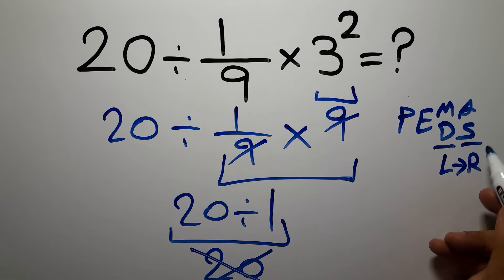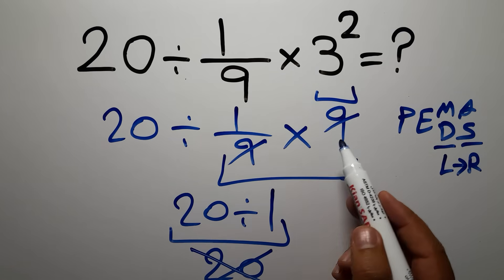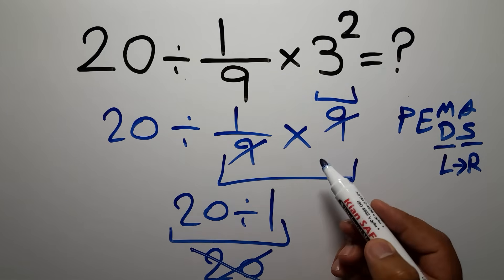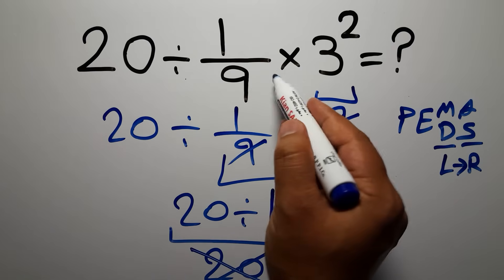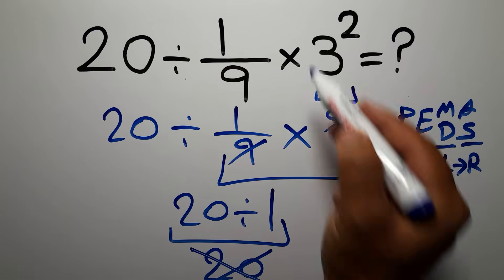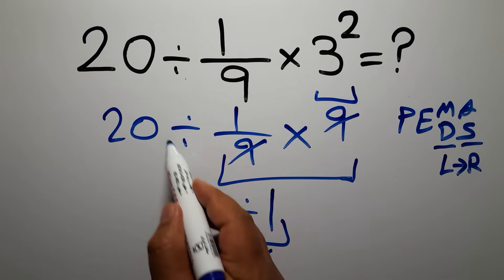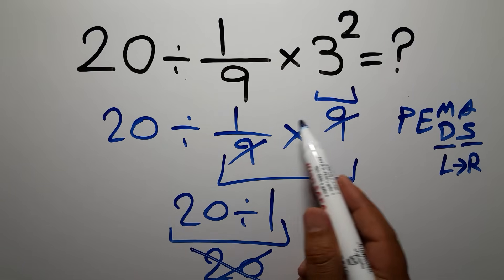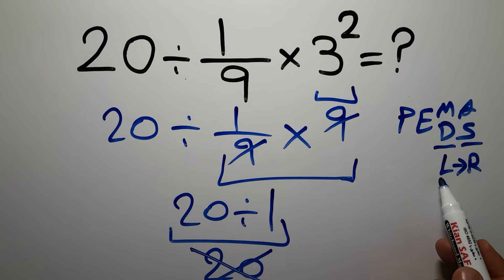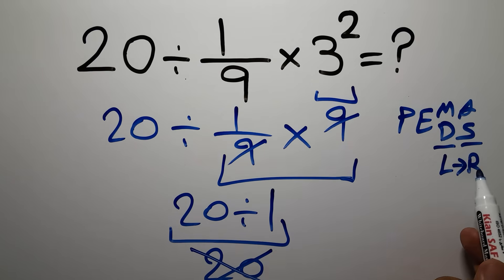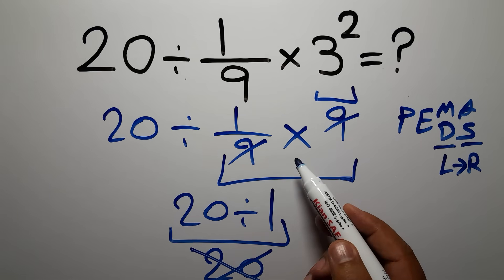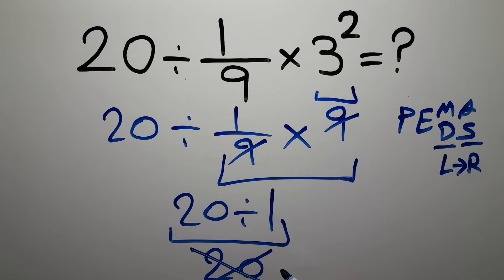So first we have to do this exponent, and after this exponent we have one division and one multiplication. After the exponent, we have to do this division — not this multiplication — because multiplication and division have equal priority and we have to work from left to right. So if we do this multiplication before this division, it is wrong.